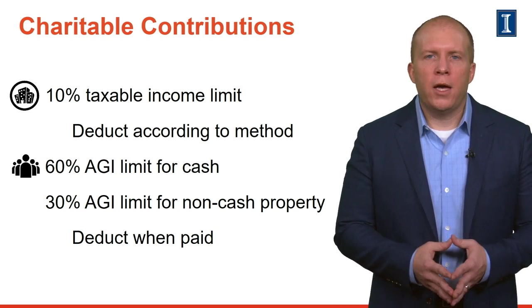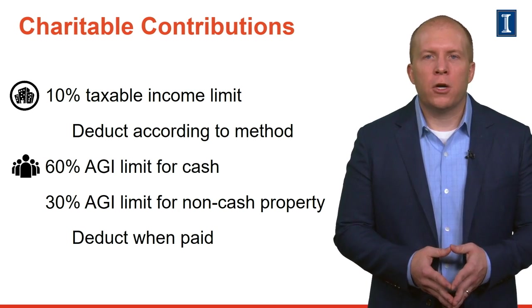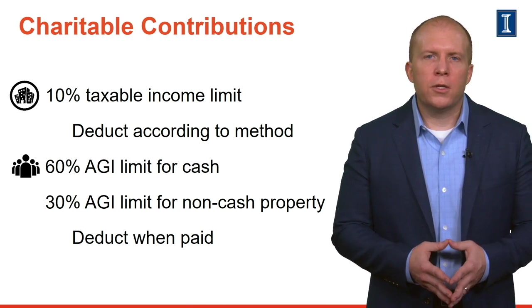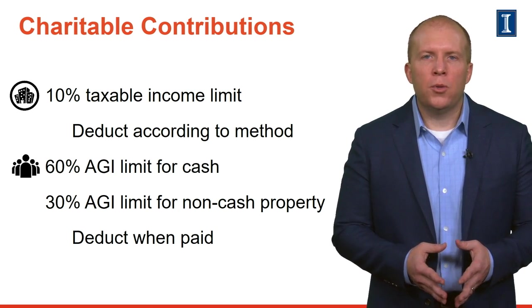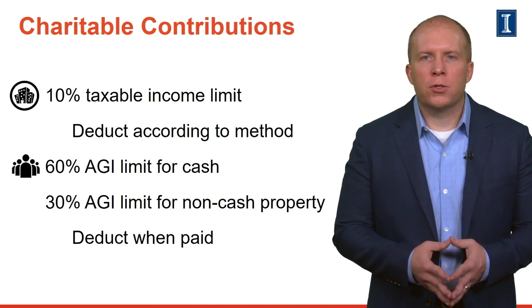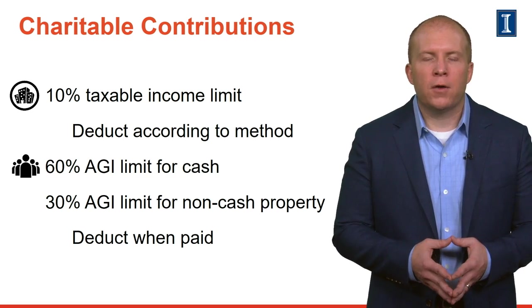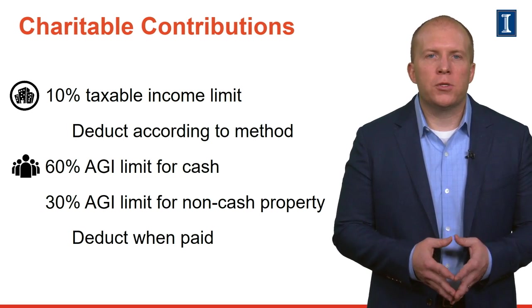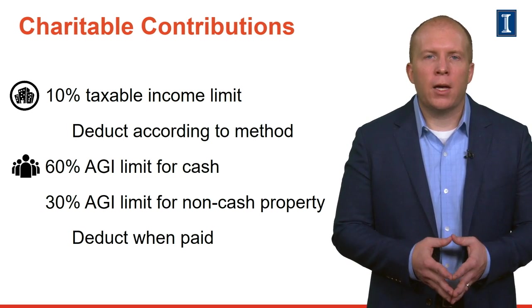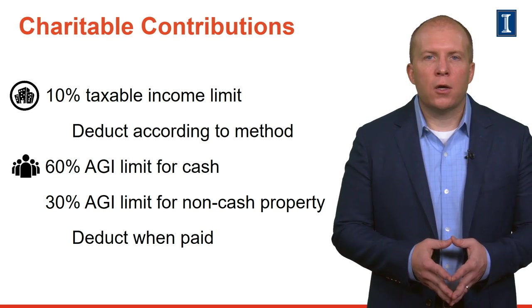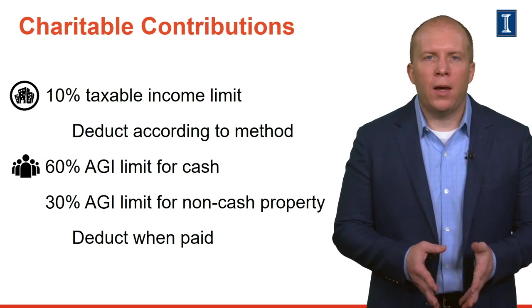Both individuals and corporations can deduct qualified charitable contributions. The corporate deduction is capped at 10% of taxable income, computed without regard to a variety of special deductions. Individuals, however, are currently limited to 60% of AGI for cash contributions and 30% of AGI for certain capital gain property. Corporations generally deduct charitable contributions according to their accounting method, while individuals deduct them when paid.